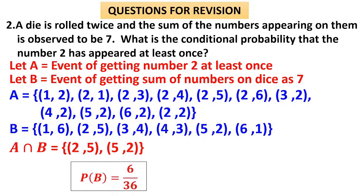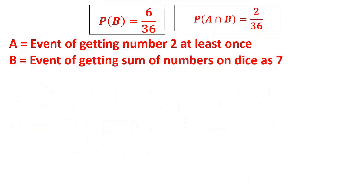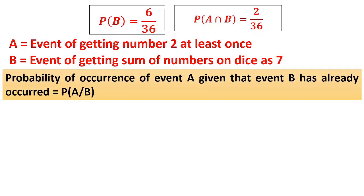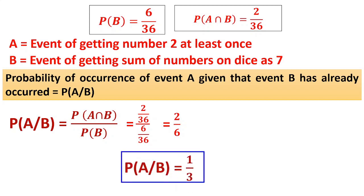A∩B: only (2,5) and (5,2) are common. P(B) = 6/36 since there are six elements in B. P(A∩B) = 2/36 since there are two elements. Using the conditional probability formula: P(A|B) = P(A∩B) / P(B) = (2/36) / (6/36) = 2/6, so the answer is 1/3. We identified the sample space, event spaces, and intersection, then applied the conditional probability formula.